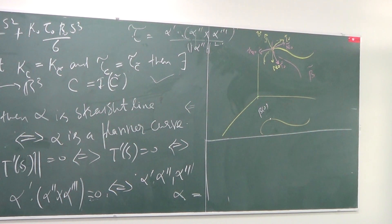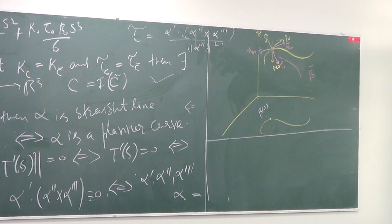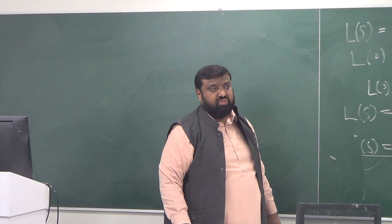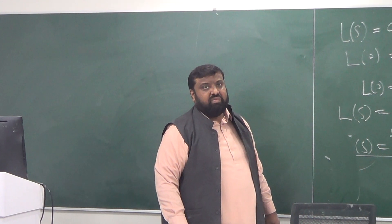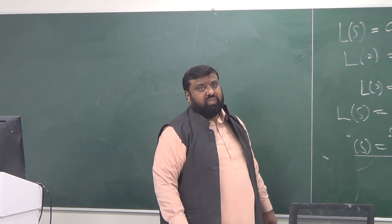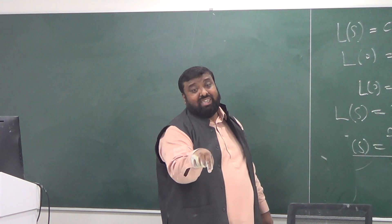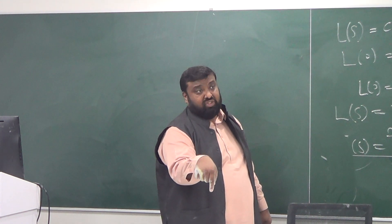Regarding the point picked from beta tilde — is it arbitrary or must you choose carefully? You can choose two arbitrary points, but they must be evaluated at the same value of s.